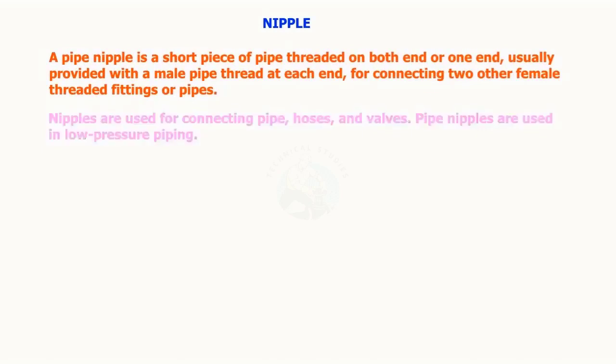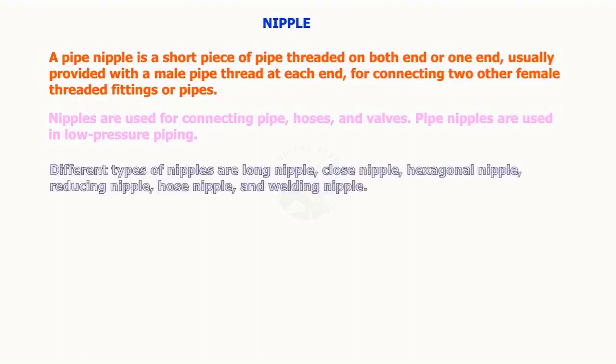Different types of nipples are: long nipple, close nipple, hexagonal nipple, reducing nipple, hose nipple, and welding nipple.